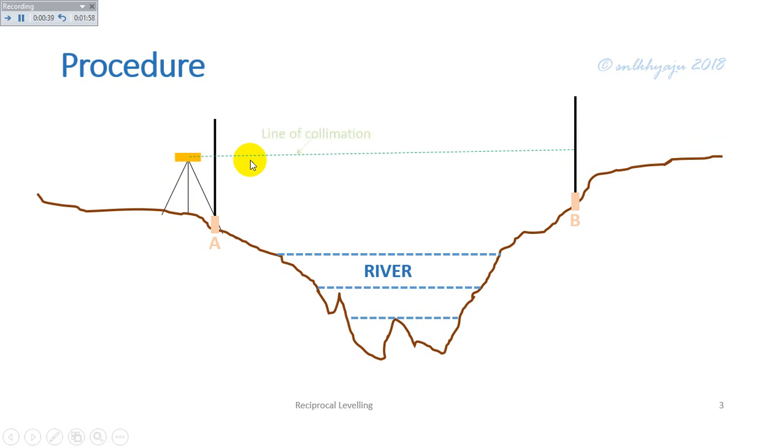The green line represents the line of collimation, the red line is the horizontal line, and the blue line represents the level line. Since staff at A is nearer to the level, we consider that there is no refraction error on point A. Therefore, reading on staff A is marked as a1.